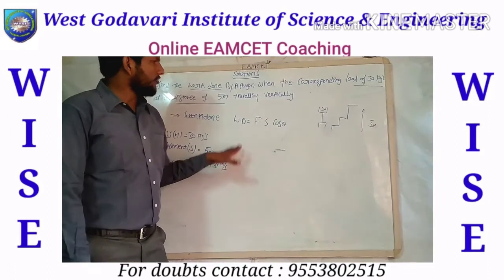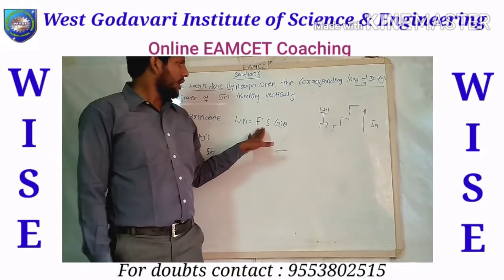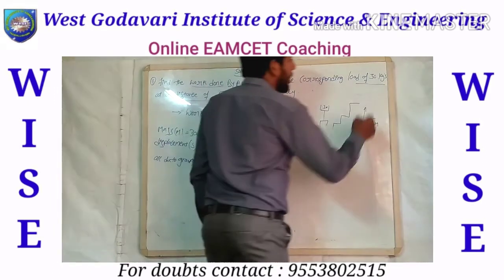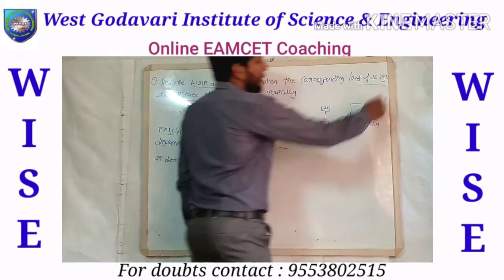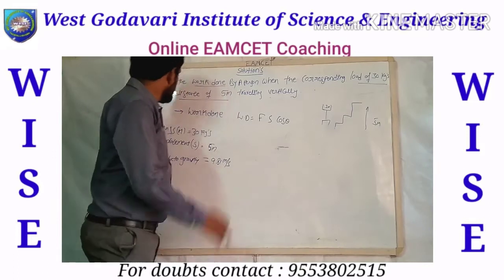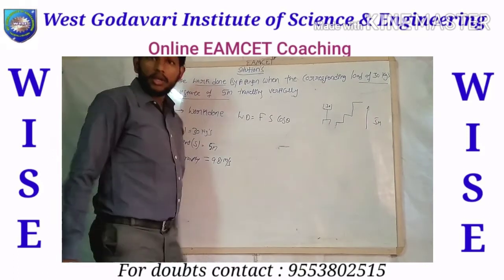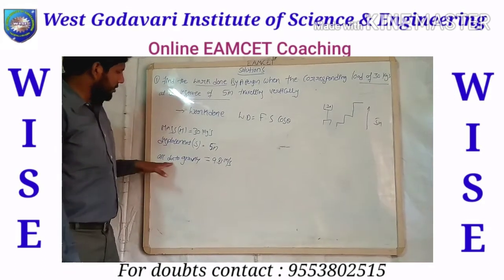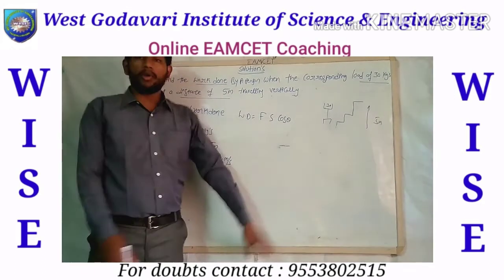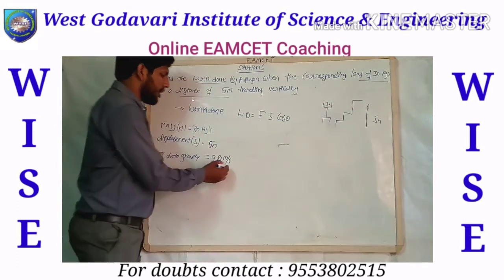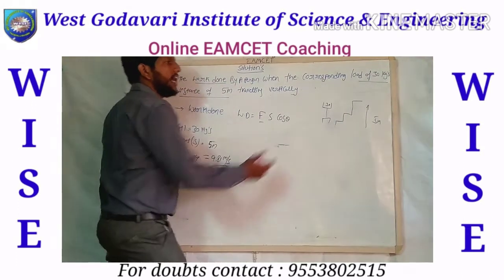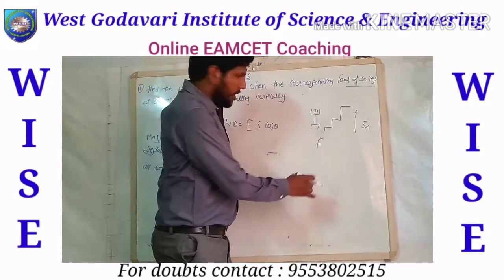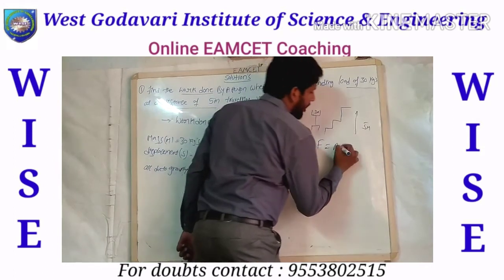In the formula we have force and displacement. We need to extract the parameters from the problem. The load is 30 kg and the distance is 5 meters. We also need the acceleration due to gravity, 9.81 m/s², to convert the load into force using F = ma.